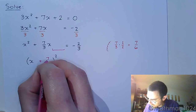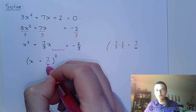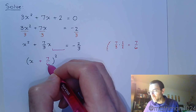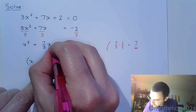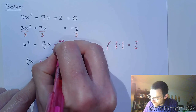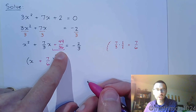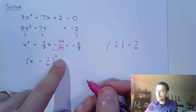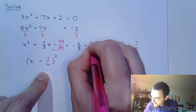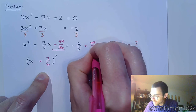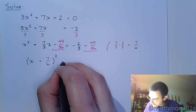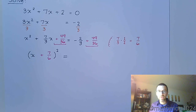We put 7/6 down, because what goes in the gap is the square of that value. Squaring 7/6 gives us 49/36. By adding 49/36 to the left side, it allows the left side to factor as a perfect square, but we must balance the equation by also adding 49/36 to the right side.